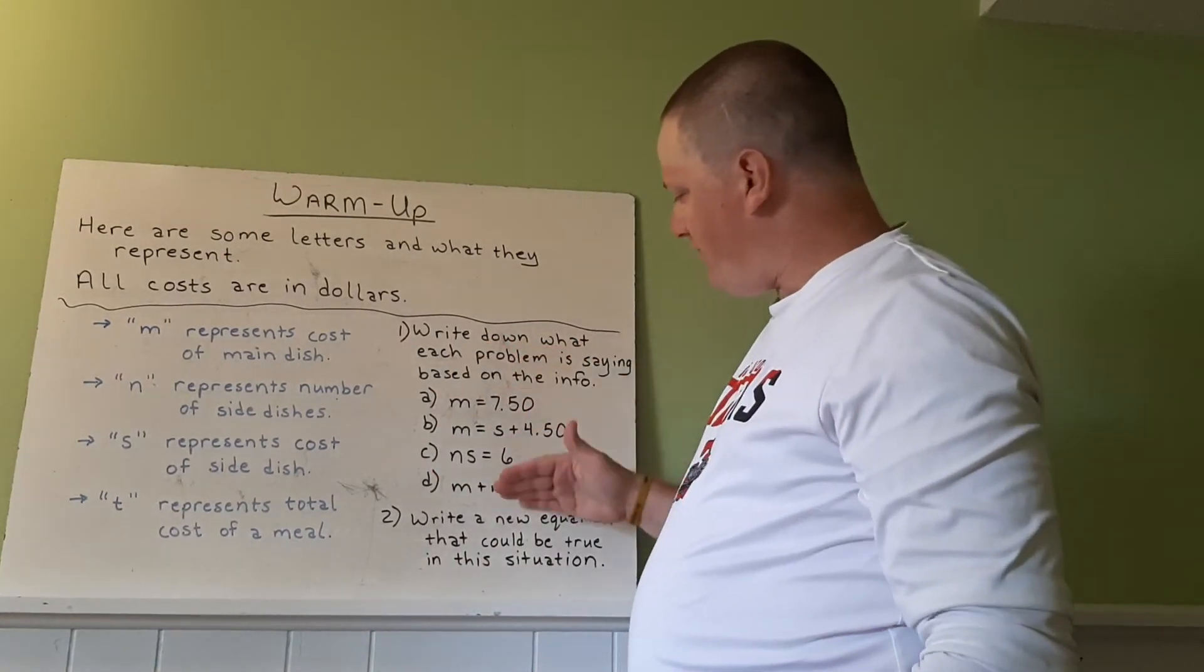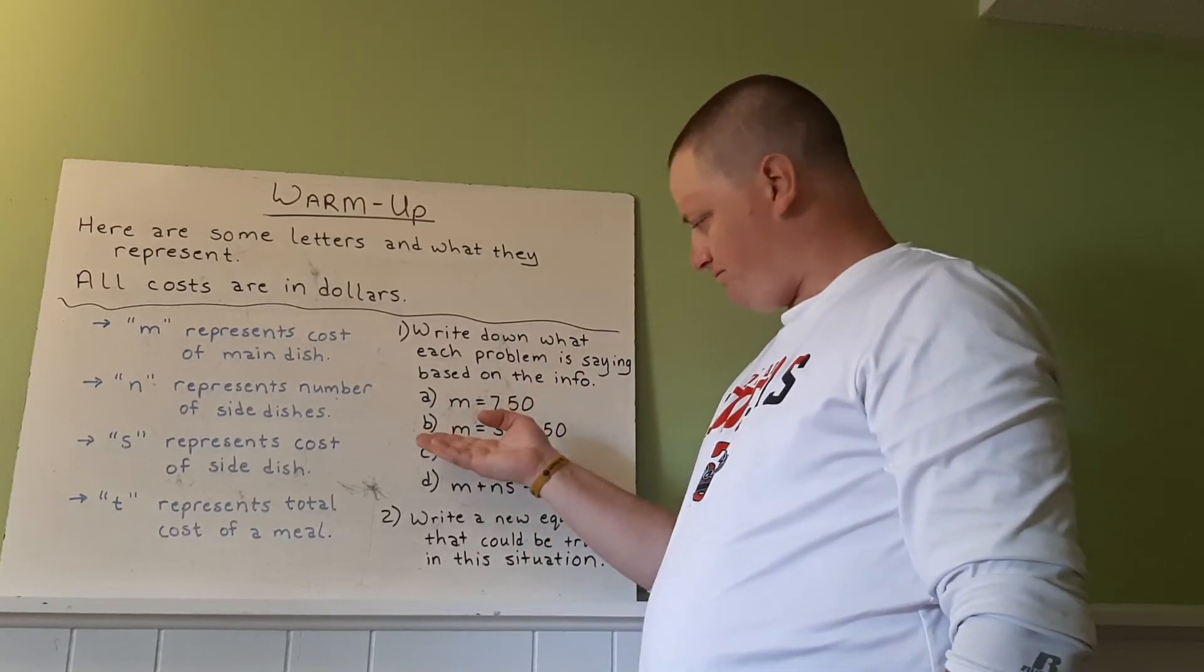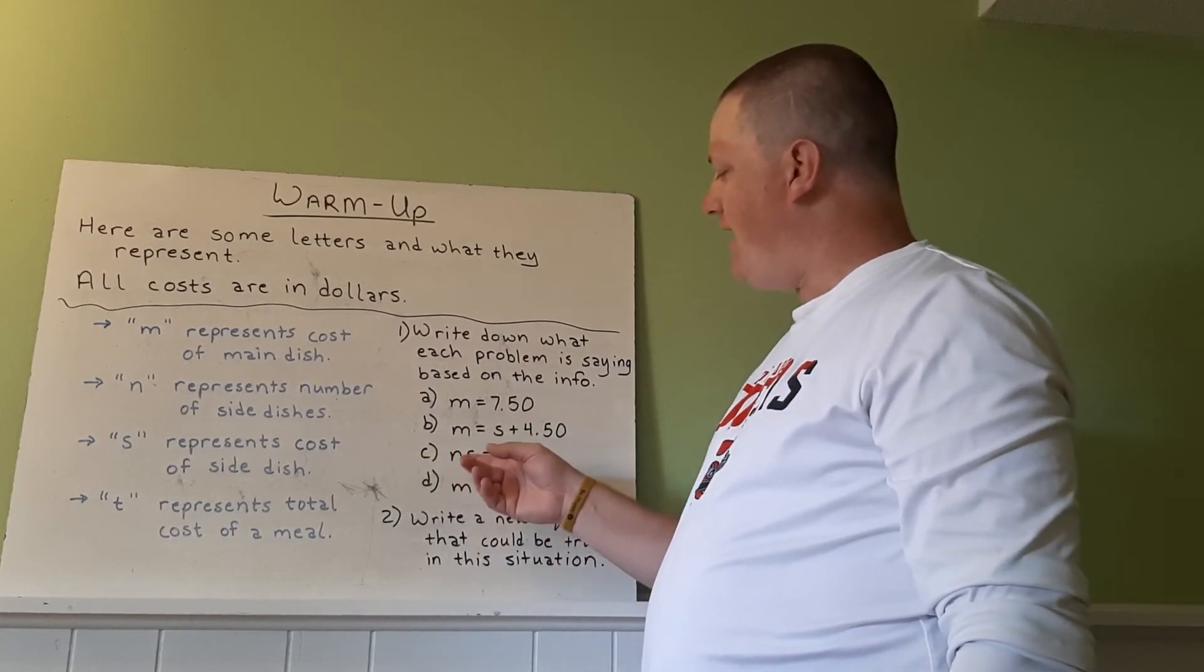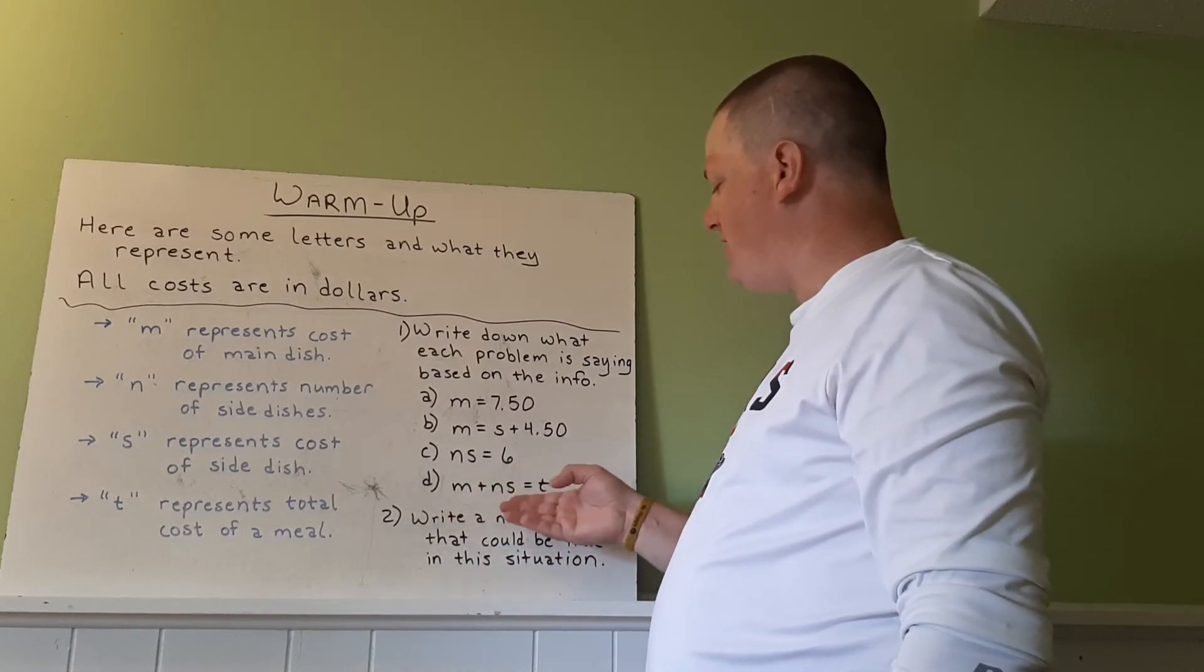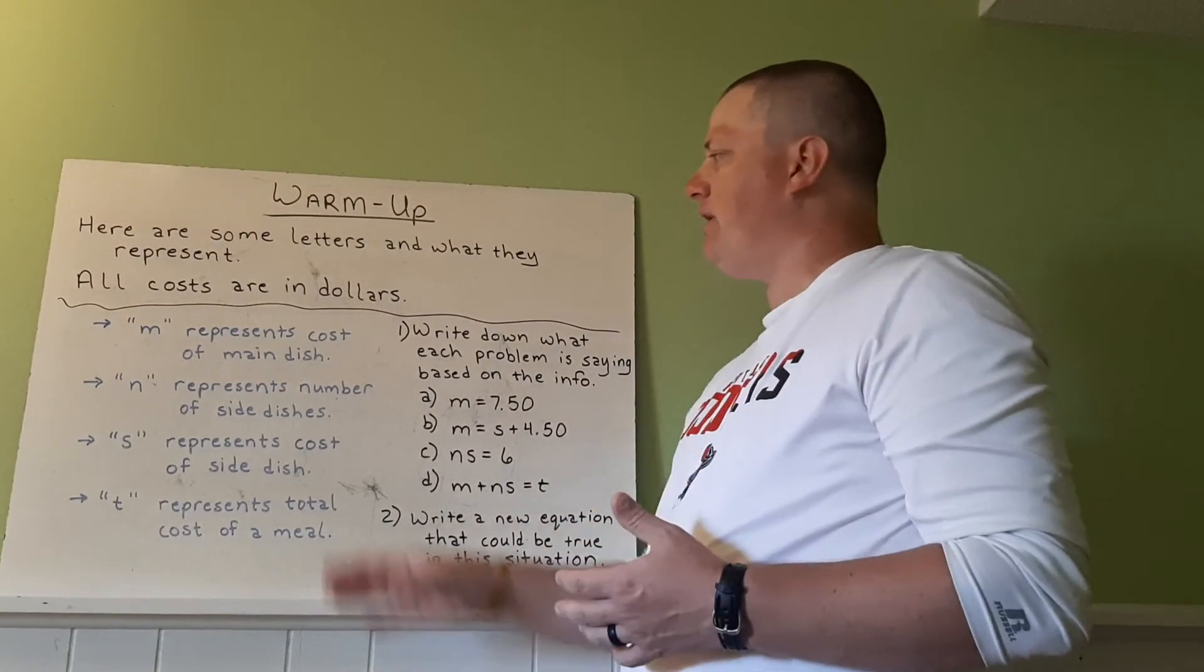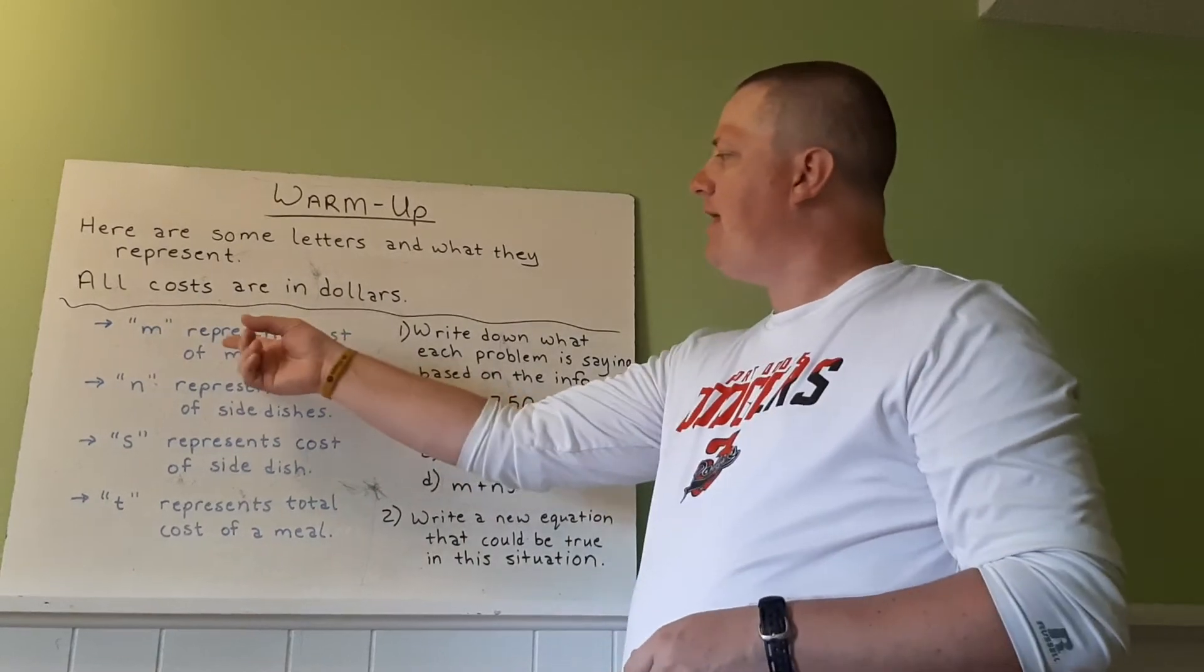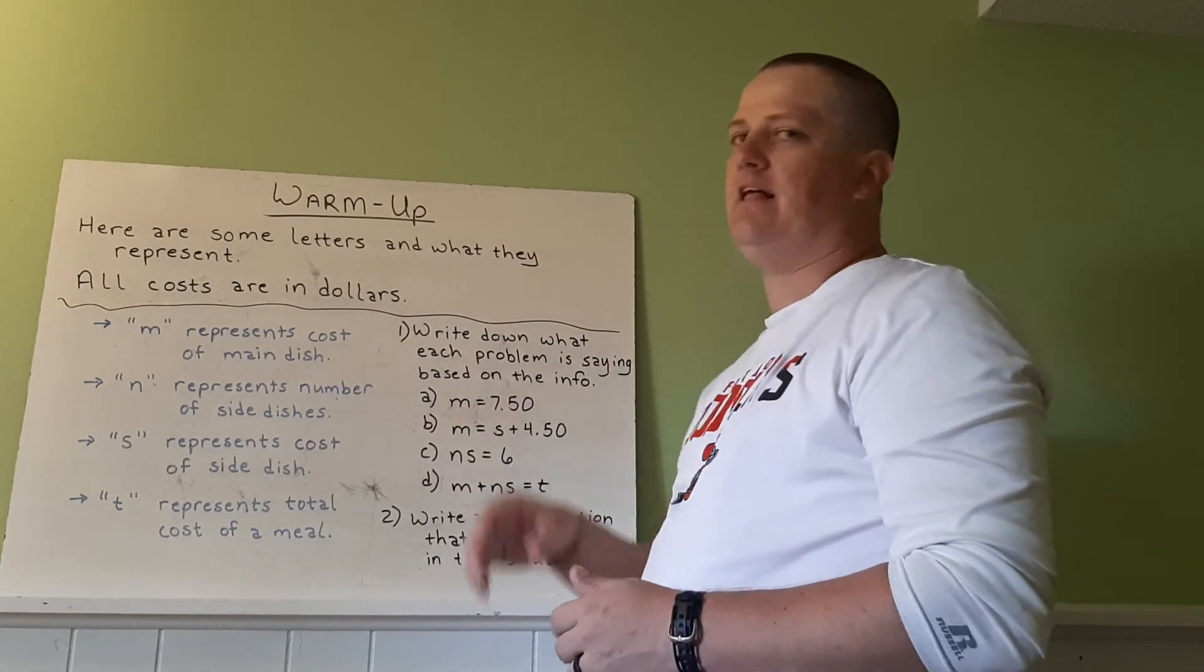So I'd like you to write down these four problems. The first one is M equals 750. The second is M equals S plus 450. The third one is NS or N times S equals 6. And the fourth one is M plus N times S equals T. After you've written these down, what I'd like you to do is use this to write what this is saying. So I'll do the first one for you and then you can kind of think from there. So the first one is saying M, the main dish is, equal we usually use is, the main dish is $7.50.